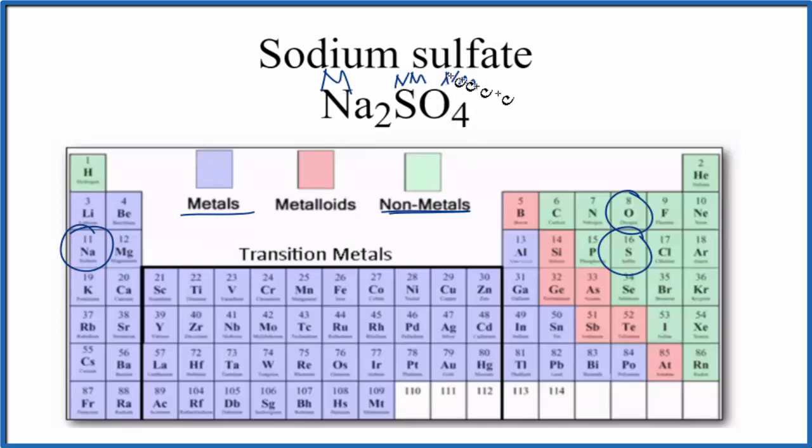When we have a metal plus nonmetals, this is going to be an ionic compound. And since it's an ionic compound, we should think about the charge on the ions.